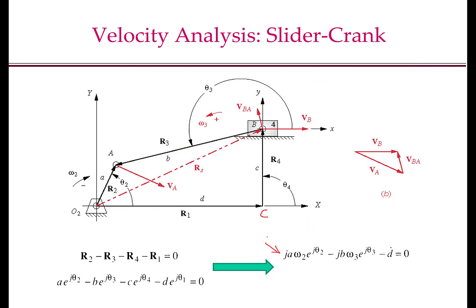The first term in the equation is v_a, or the velocity of point a with respect to o2, obtained by taking the time derivative of r2. The last term, d dot, is the velocity of point b — it is the x component of velocity of point b, and the y component is zero because of the sliding joint. So the entire velocity of point b is along the x direction. The middle term is the velocity of point a with respect to b, obtained by taking the time derivative of r3.